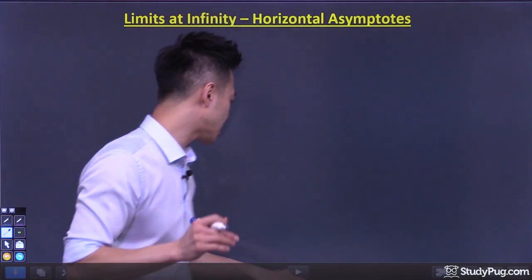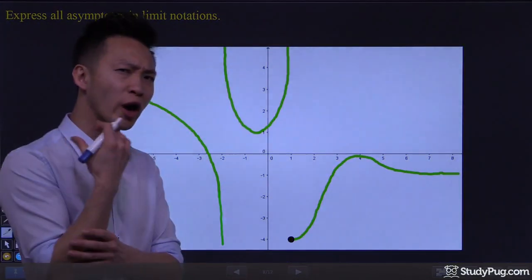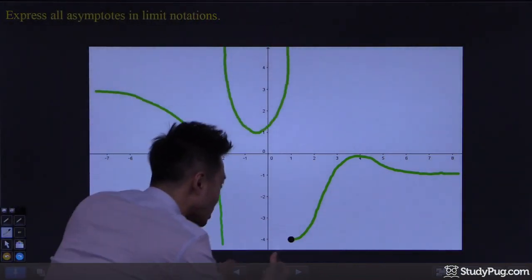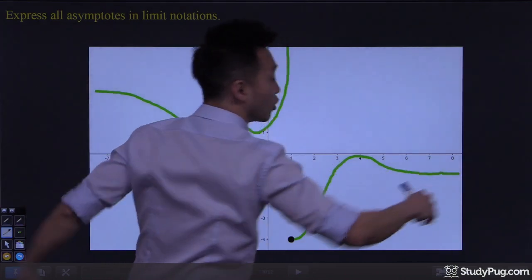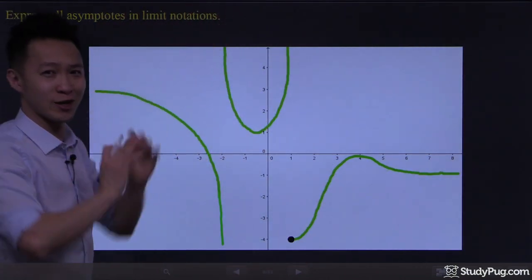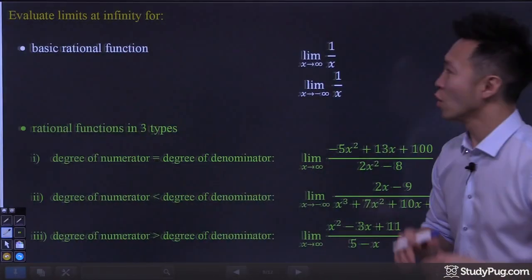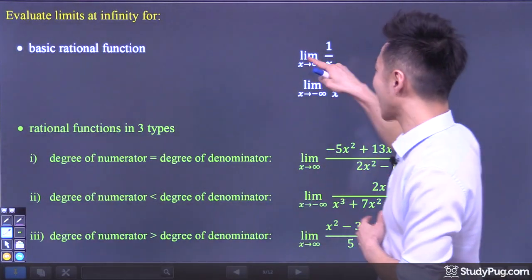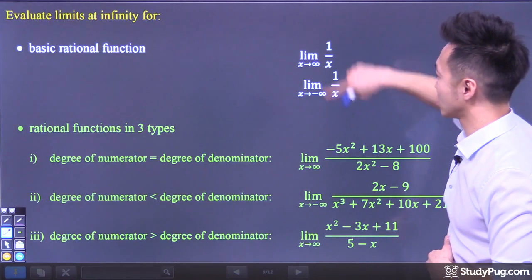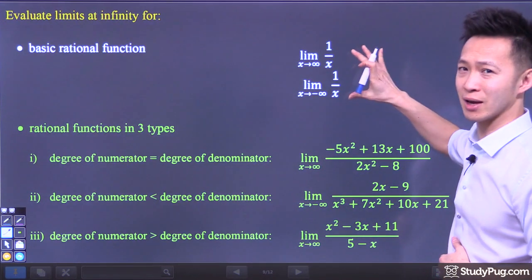Here is an overview of our lesson today. In example one, I really just want to help you concrete the idea on how vertical asymptotes and horizontal asymptotes can be interpreted as limit notations in calculus. Next, in example two, we'll be looking at finding the limits at infinity for the most basic rational function, 1 over x, which is really the basis of our lesson today.